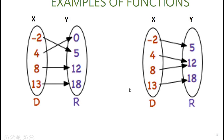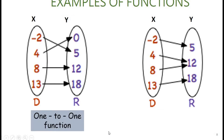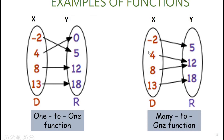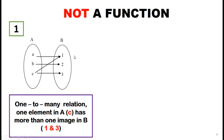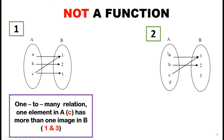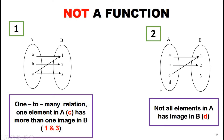Here are examples of functions. The first is a one-to-one function where every element in set X maps to each element in set Y. The second is a many-to-one function where two objects from set X map to one image in set Y. The third example is not a function because object C has more than one image. The fourth is also not a function because not all elements in A have an image in B — specifically, D has no image.